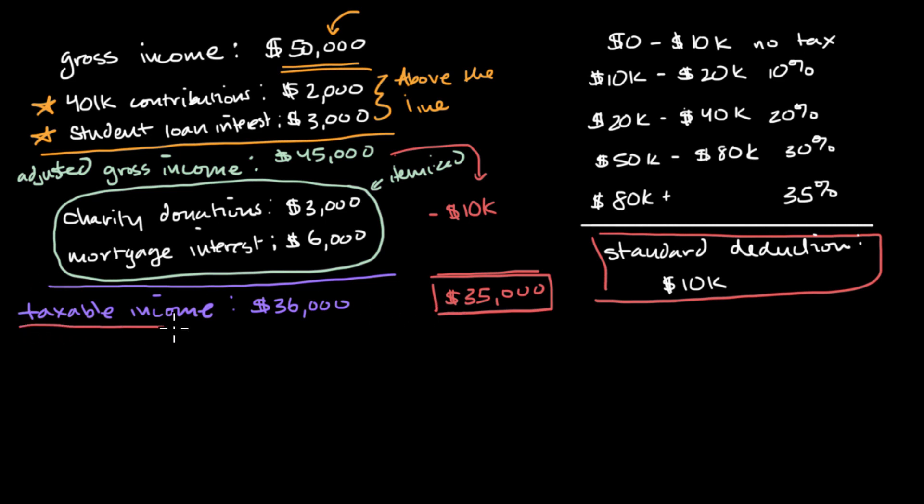And now that we've calculated this taxable income, this $35,000, we are ready to now actually calculate based on this schedule of the actual tax brackets. So one way to think about it is the first $10,000 right over here, we are going to have no tax. So we have 10K, no tax. Now the next $10,000 right over here is going to be taxed at 10%. So the next 10K is going to be taxed at 10%. So now we've accounted for 20K. We have $15,000 left.